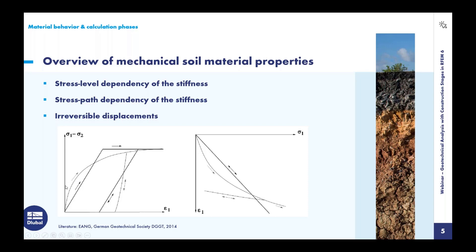We can see a linear elastic perfectly plastic model like Mohr-Coulomb, and an elastic plastic model like the hardening soil model. With the elastic-plastic model, I want to show these key properties: the stiffness of soil shows a stress level dependency — if the stress changes, the slope of the curve changes, meaning stiffness changes. We also have stress path dependency of stiffness. There is a difference between first loading and unloading/reloading stiffness — the unloading and reloading stiffness is higher than the first loading stiffness. We also have irreversible displacements, hardening effects, and plasticity when failure level is reached.